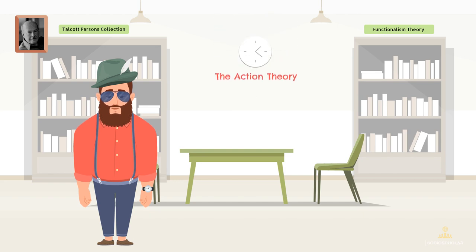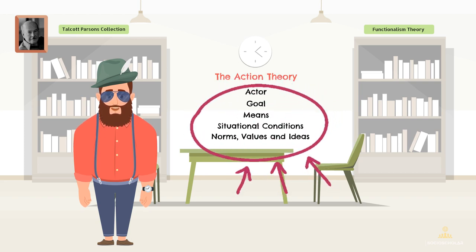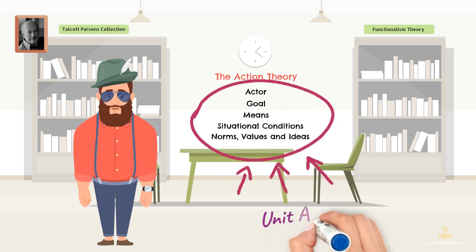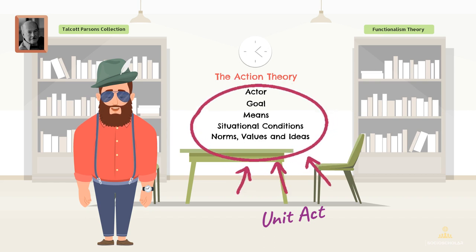He identified five parts to any action: the person doing it, the actor; what they want to achieve, the goal; how they plan to do it, the means; where and when they do it, the situational conditions; and the cultural rules or values that guide them — norms, values, and ideas. These elements form what Parsons called a unit act. According to him, every social system or society is made up of these unit acts, and these acts, guided by cultural rules or values, help society keep going the way it does.